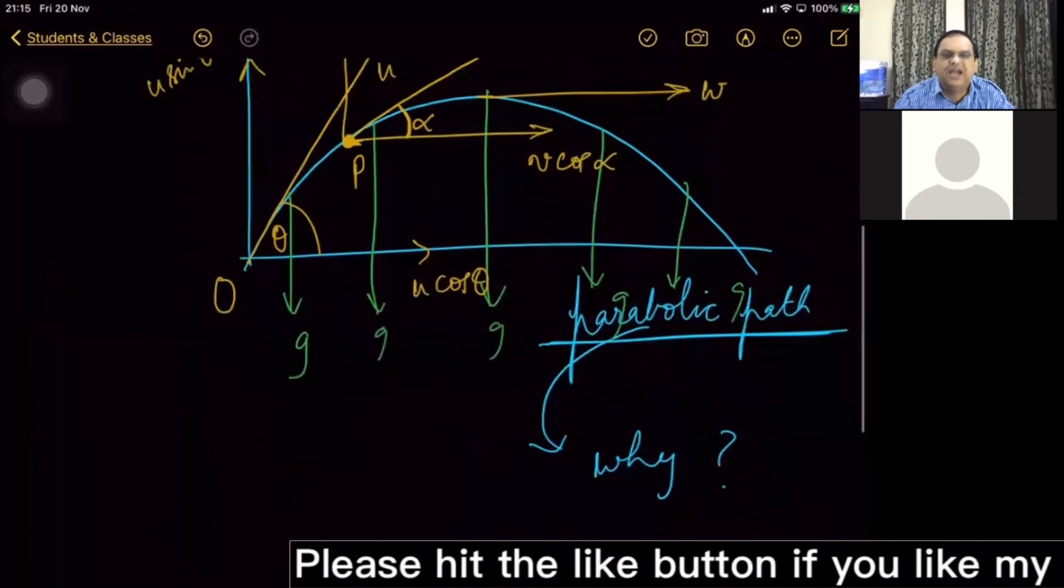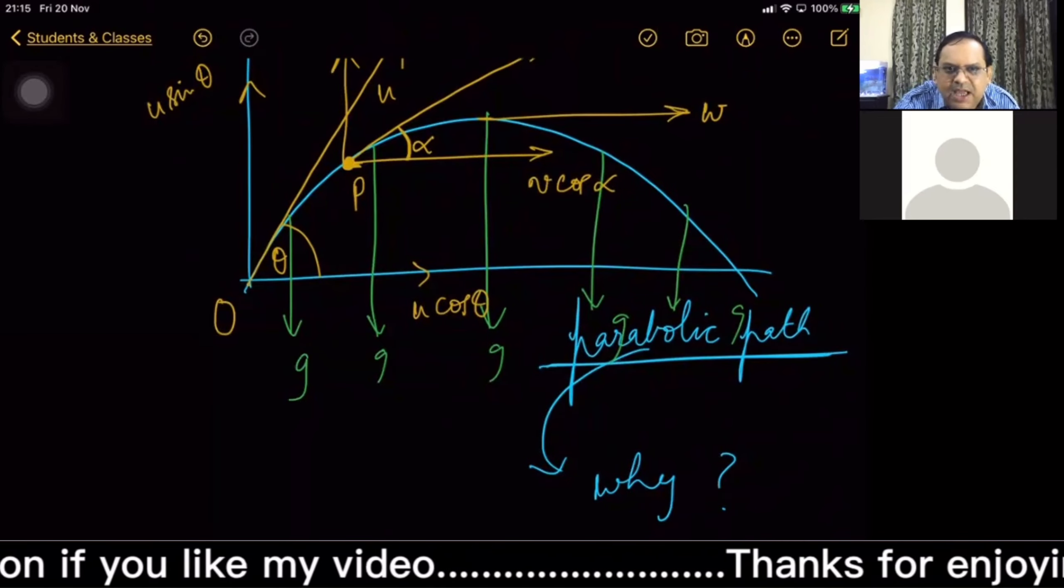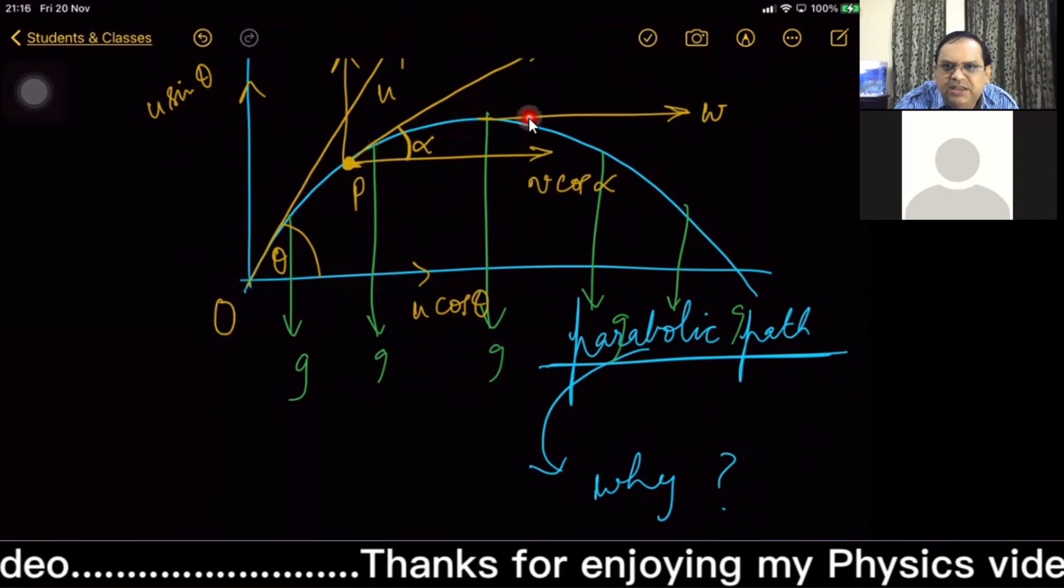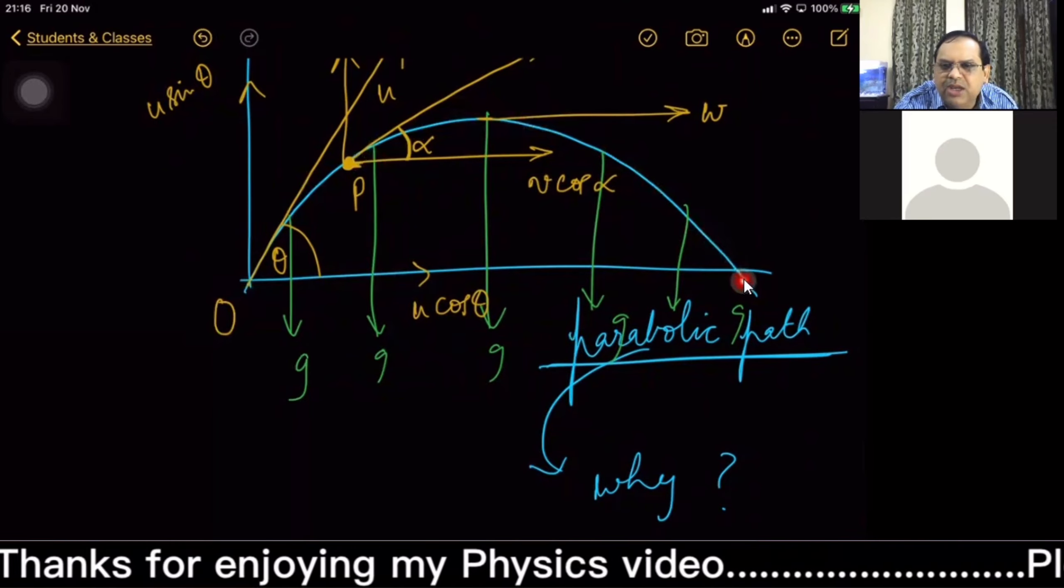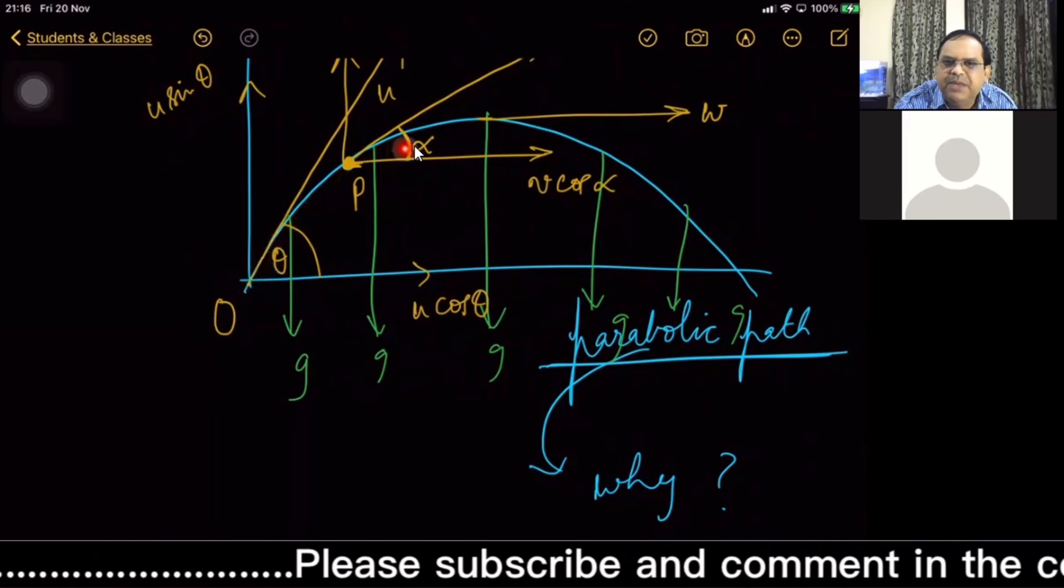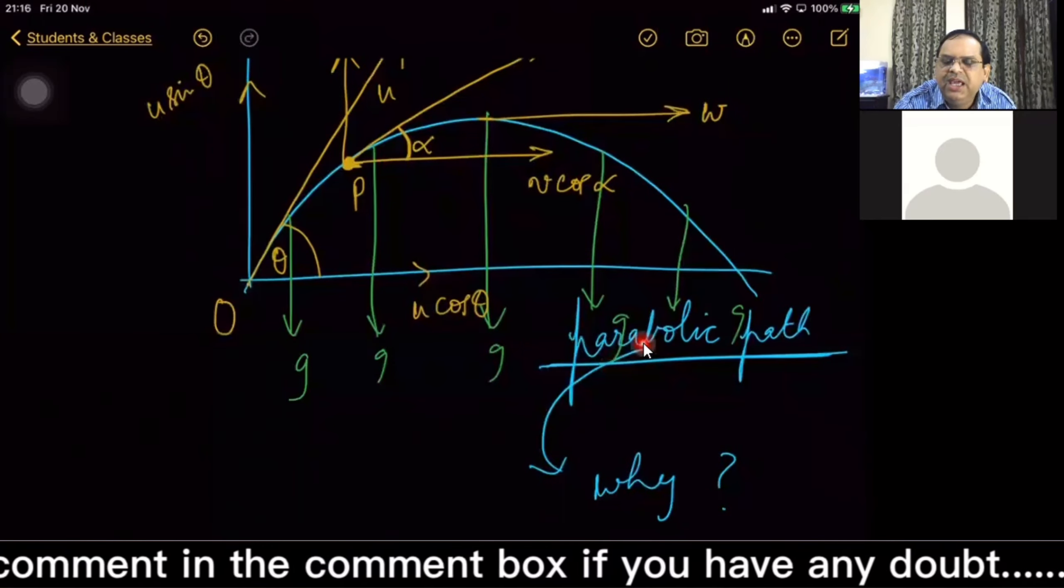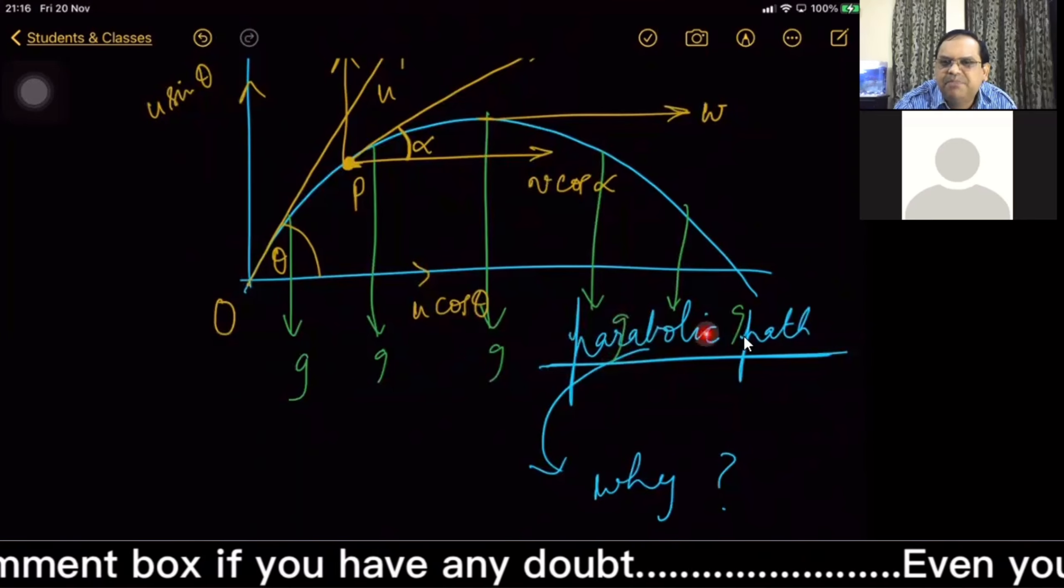Now our next one is time of flight, time taken in covering this whole parabolic path. One of my questions is still unanswered: why do we have this parabolic path?